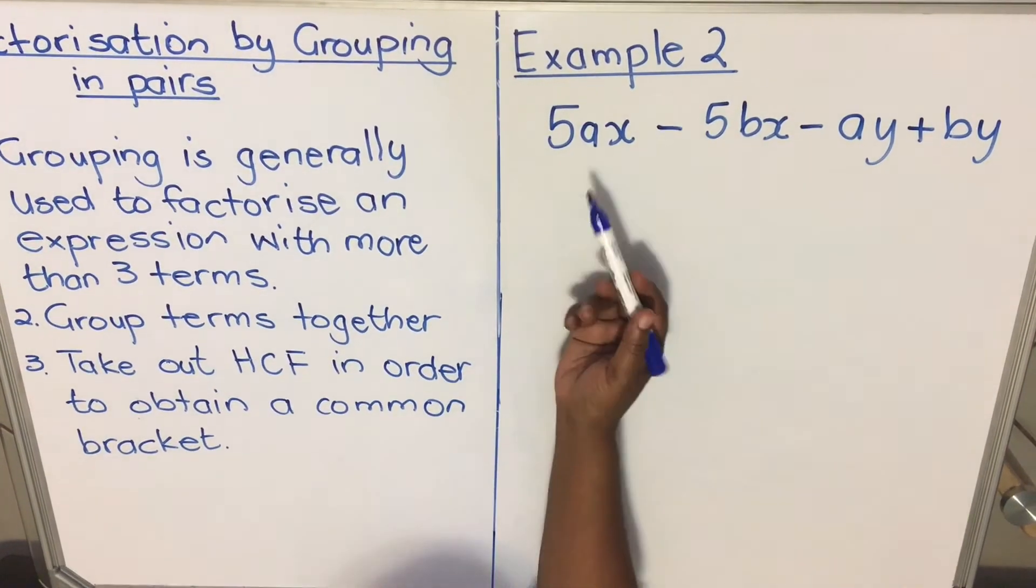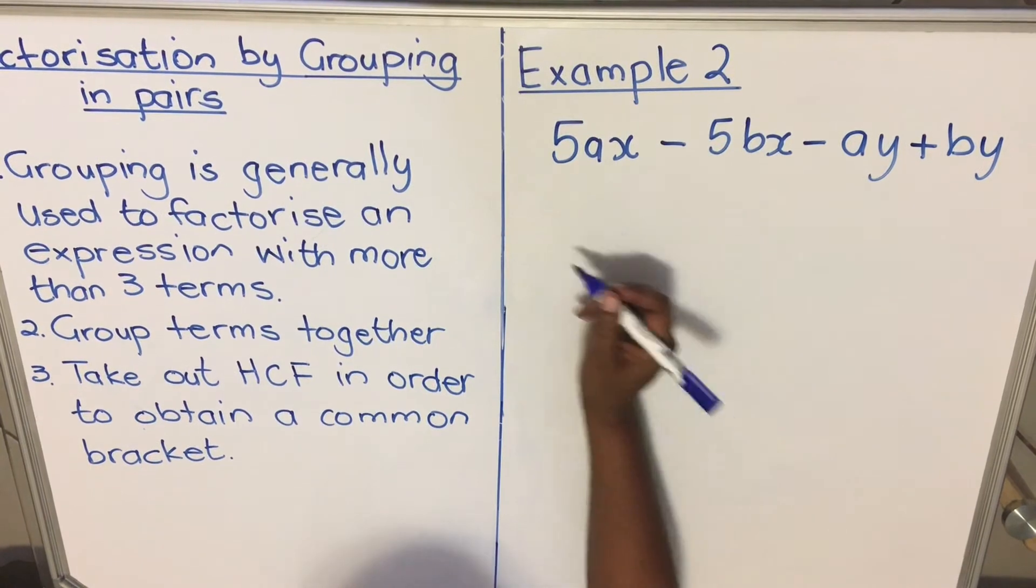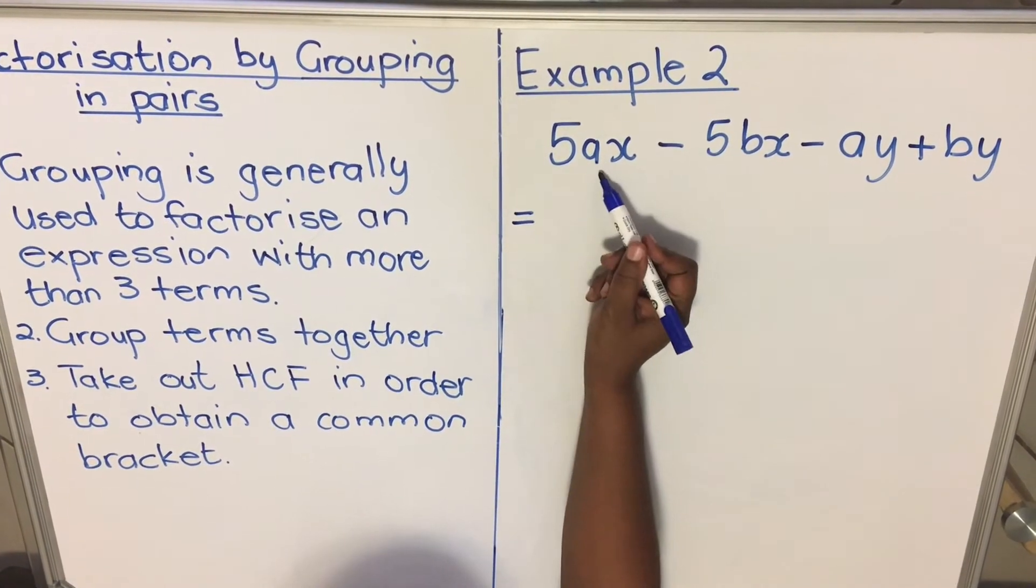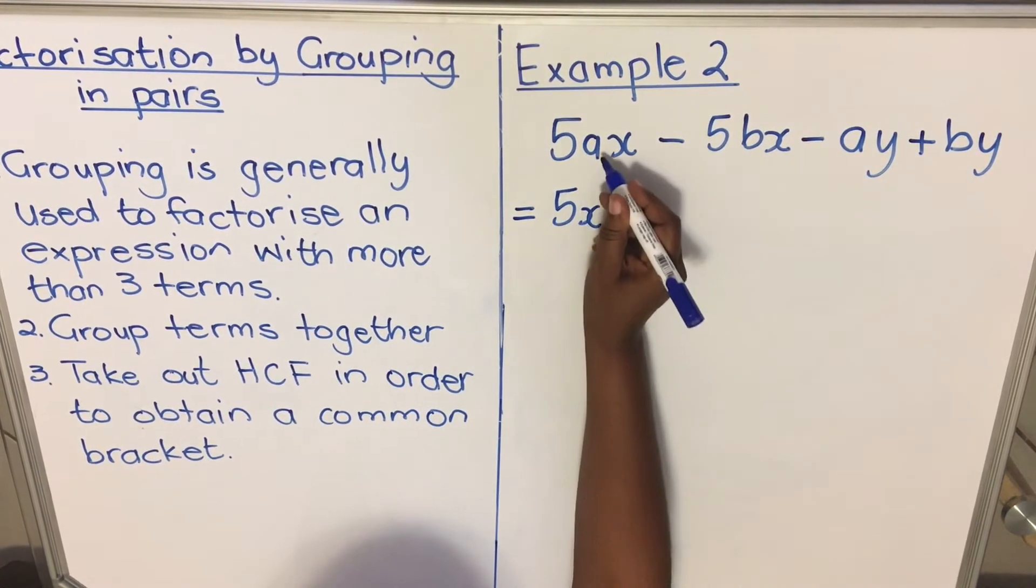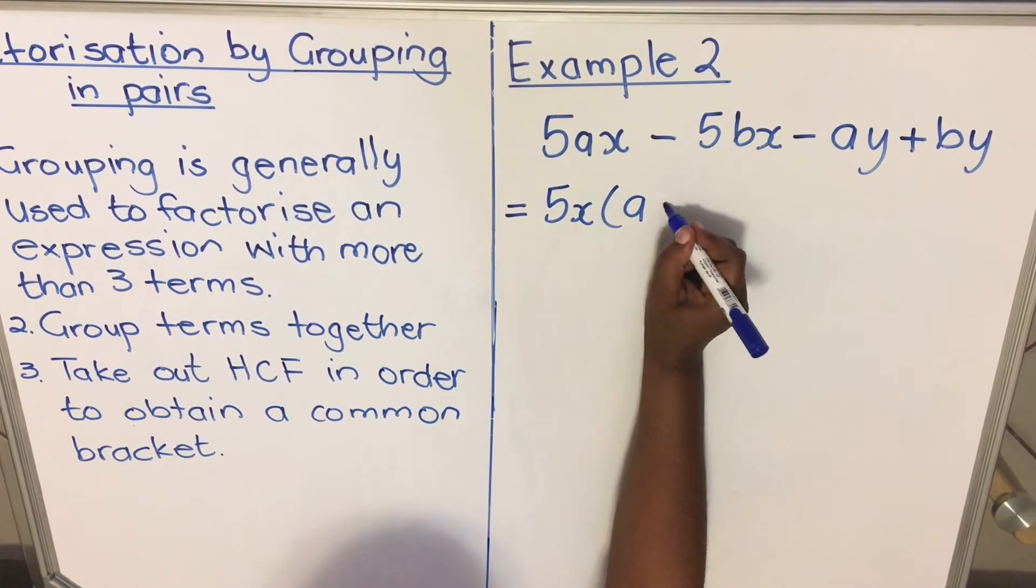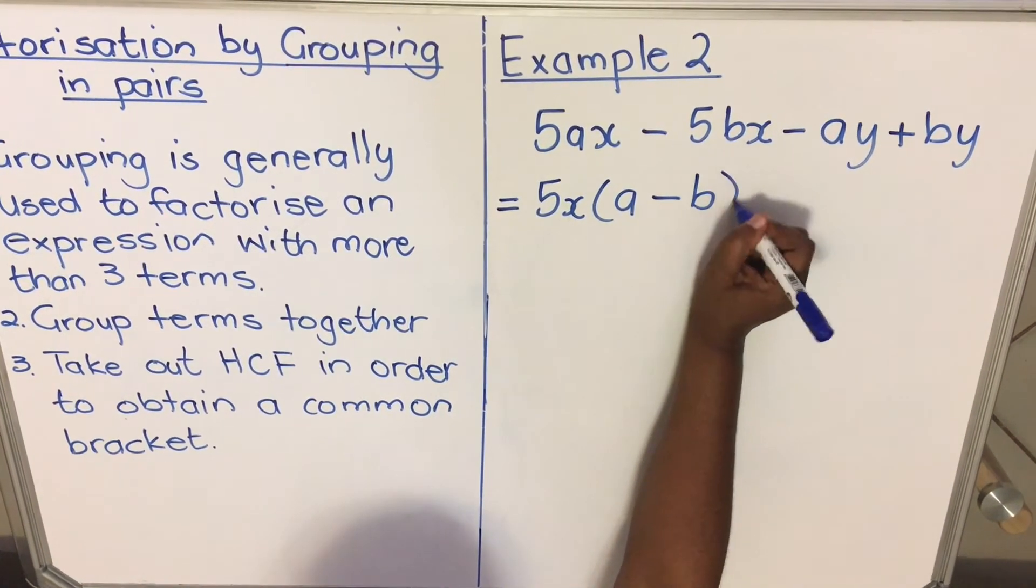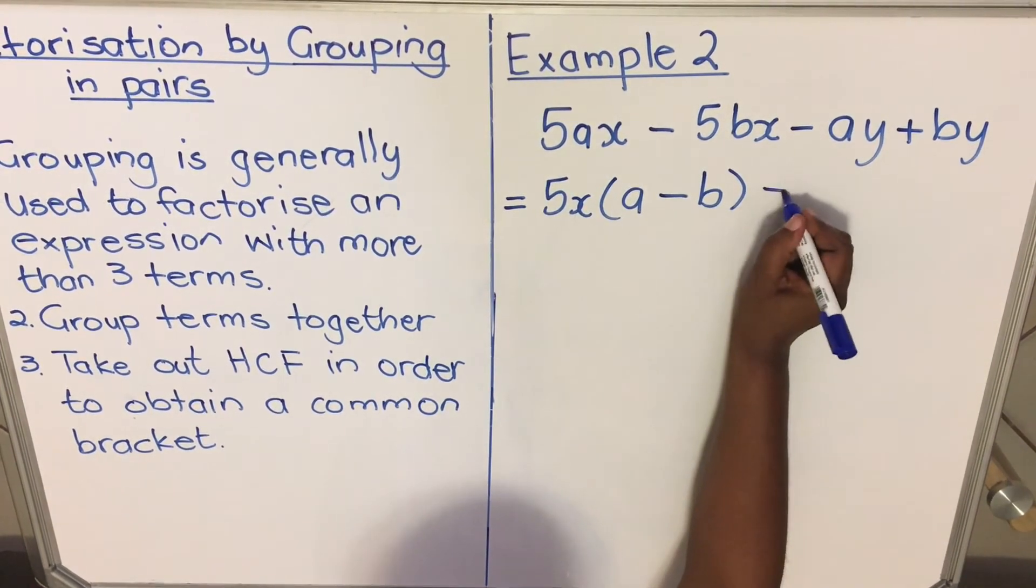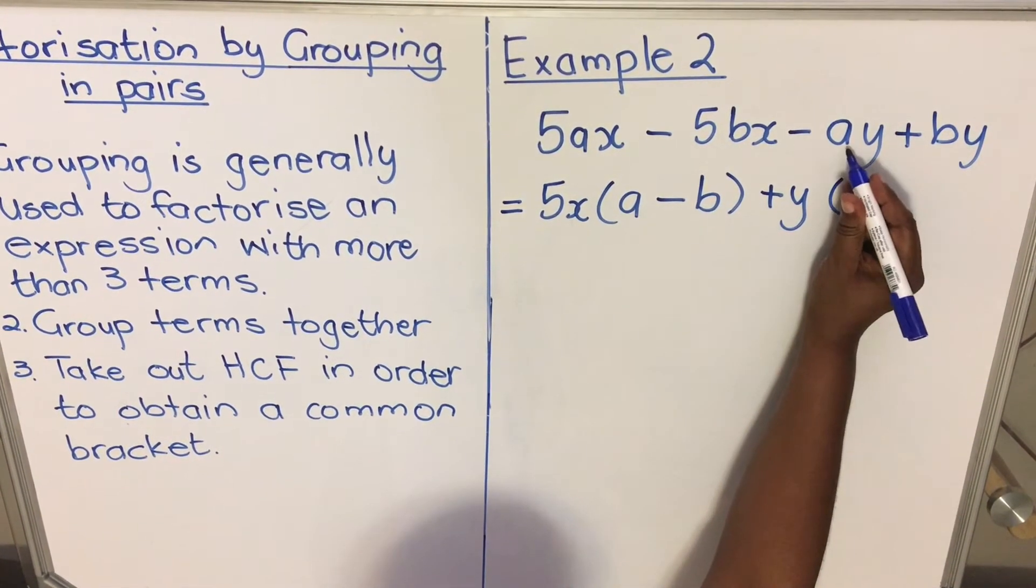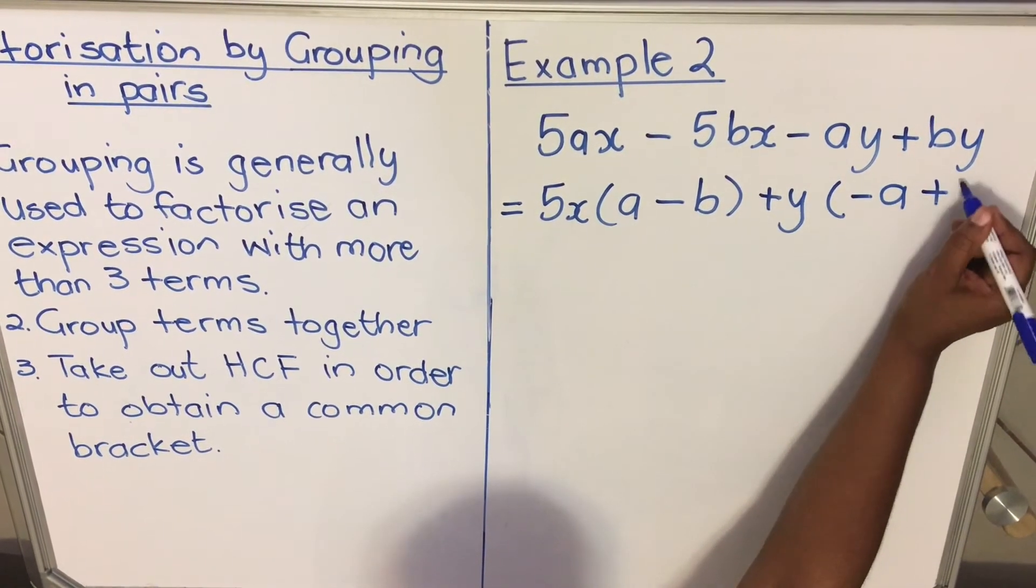Let's look at the second example. We have four terms, so these two terms we'll group together and these two we'll group together. The common factor in this term is 5x, so in the first term I'll be left with (a - b). Here the common factor is plus y. In this term I'll be left with (-a + b).